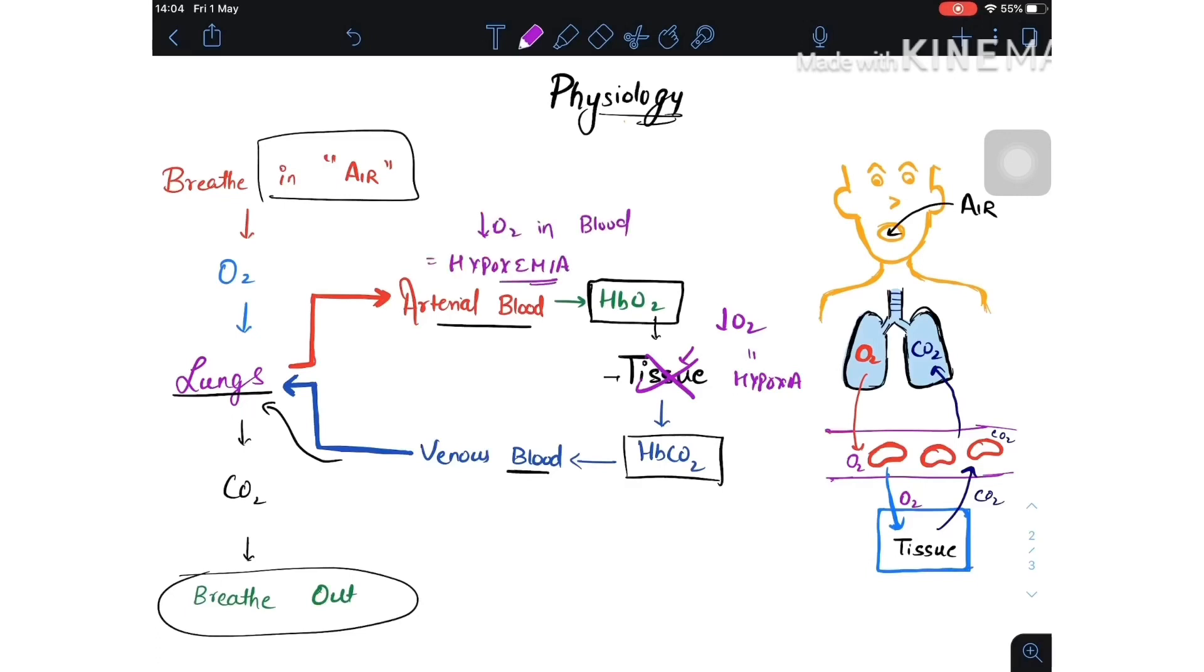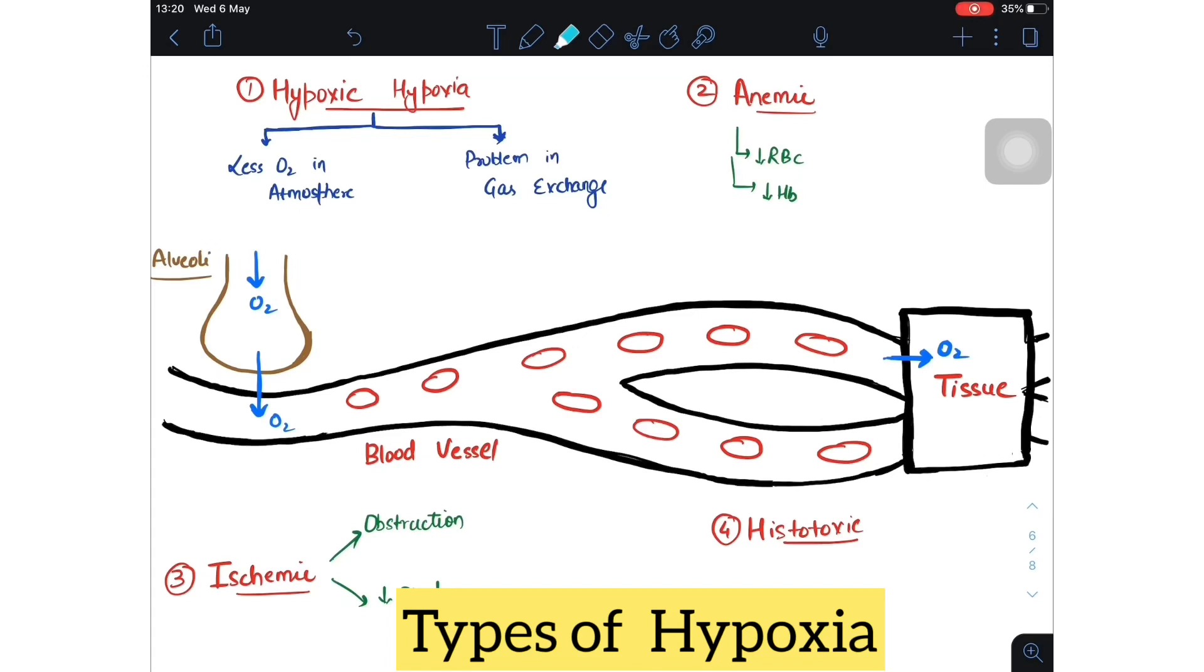There are four types of hypoxia. We'll start with hypoxic hypoxia. In hypoxic hypoxia, there is a problem of O2 going into the blood vessels. It can be two cases: either O2 is not here, or there is a problem in gas exchange.